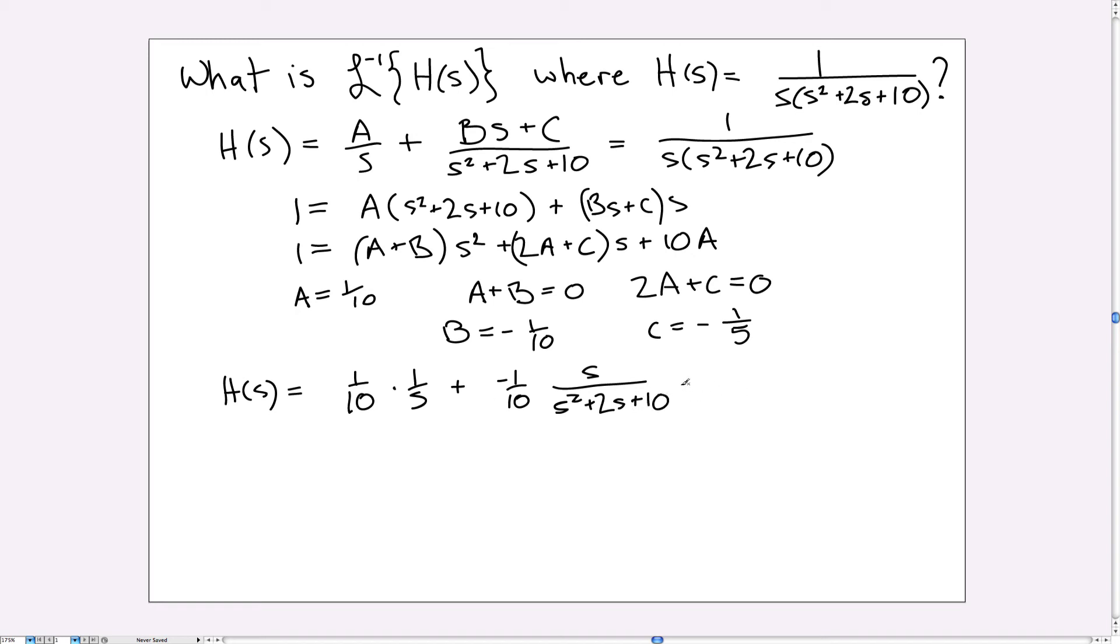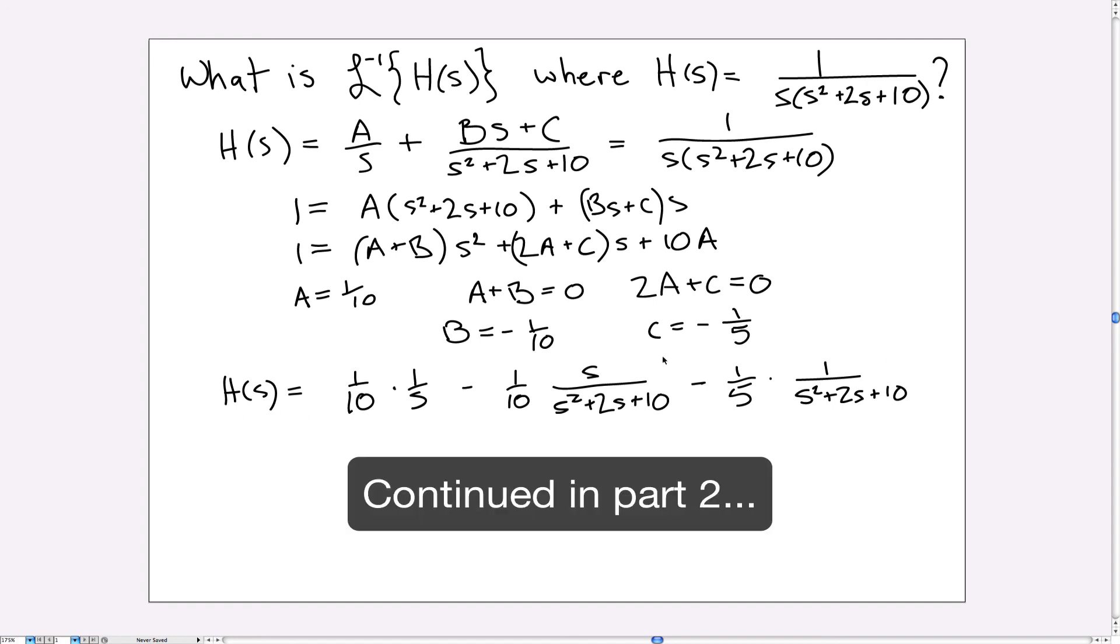And on the next term here, I have a minus one over five, that's C, times just one over S² plus 2S plus 10. Get rid of that plus sign there, and that's the minus sign. So that's partial fraction decomposition, and now we need to invert this function H(s).